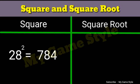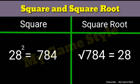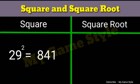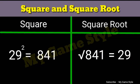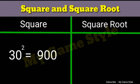Twenty-eight square is equals to 784. Square root 784 is equals to 28. Twenty-nine square is equals to 841. Square root 841 is equals to 29. Thirty square is equals to 900. Square root 900 is equals to 30.